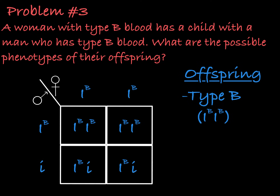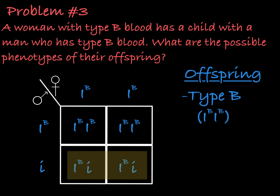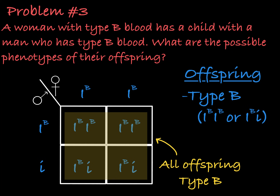If one parent is homozygous and one is heterozygous, the homozygous parent would still always pass on the ib allele, meaning their offspring could be homozygous ib or heterozygous. This combination of parents could produce only type B offspring.